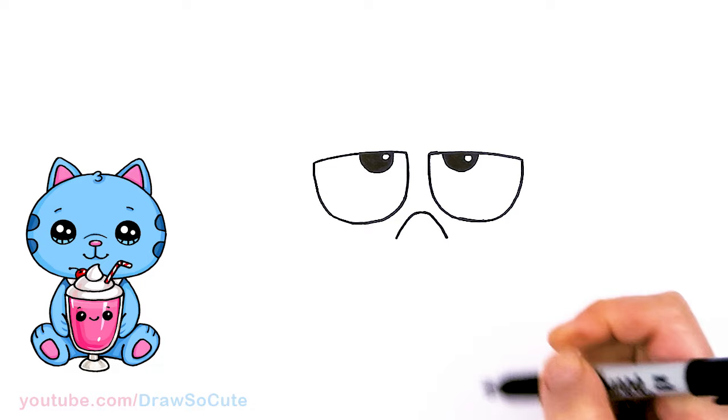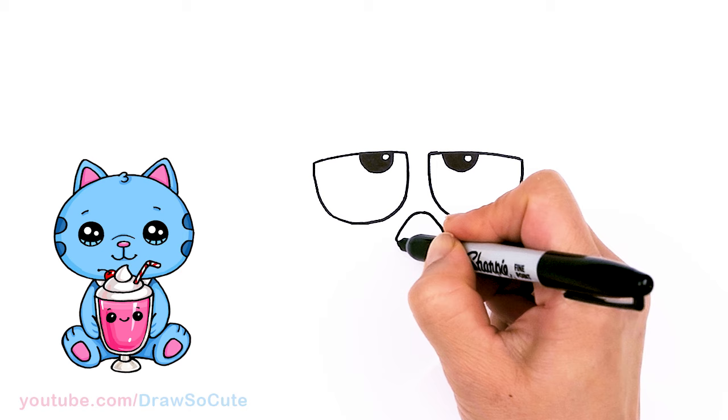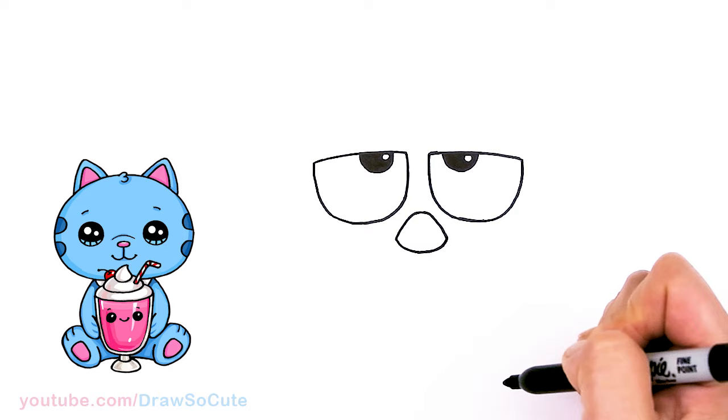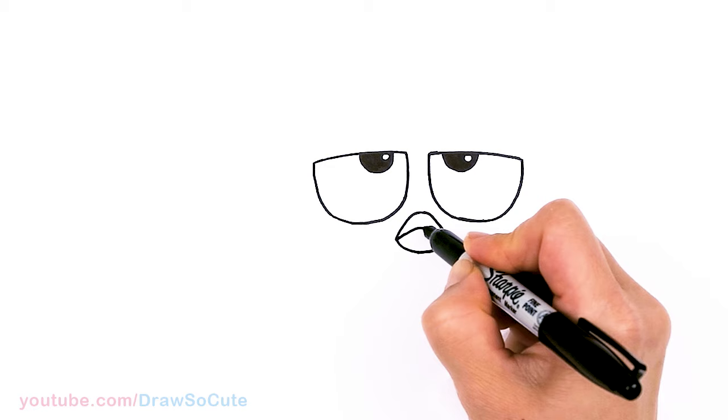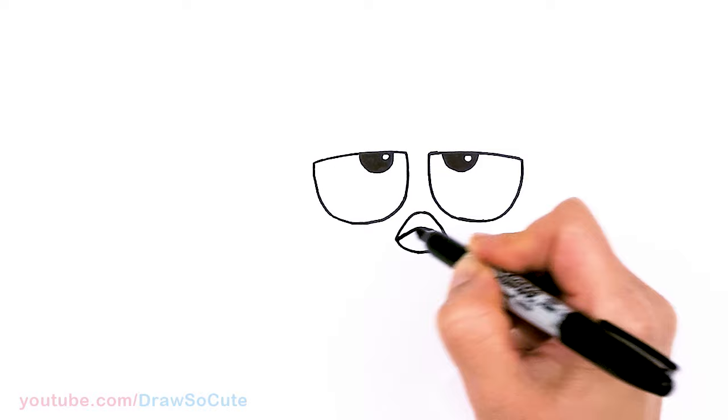And then at the bottom now that these two points are even we're gonna come to the bottom and draw a shallow curve for the bottom of the beak. And then in between we're just gonna go ahead right here and draw a curve right in between.